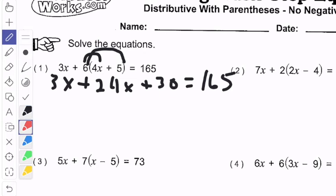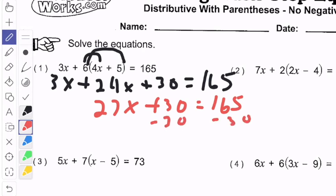So I have 3x and 24x. 3x and 24x is 27x plus 30 equals 165. Next step like we just did, subtract 30 from both sides of the equation.